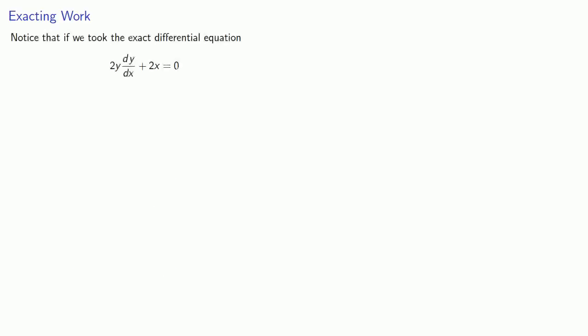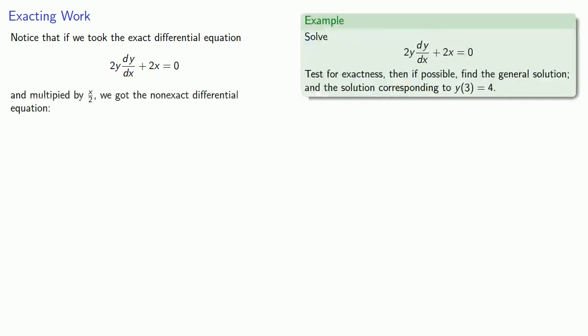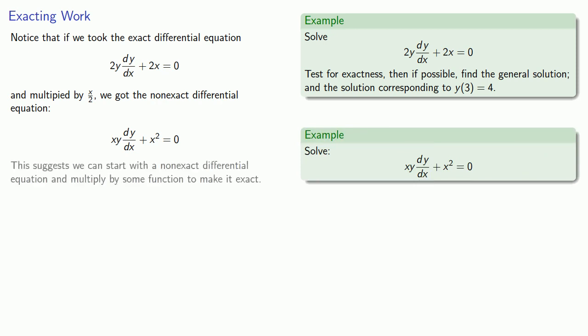It's worth making the following observation. Notice that if we took the exact differential equation, which we were able to solve, and multiplied by x over 2, we got the non-exact differential equation that we weren't able to solve. This suggests we can start with a non-exact differential equation and multiply by some function to make it exact — in other words, we might be able to find an integrating factor. We'll take a look at that next.